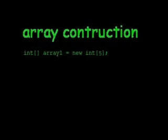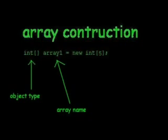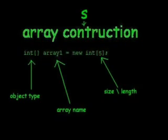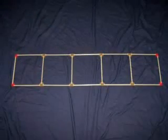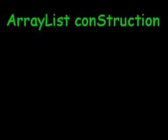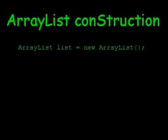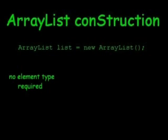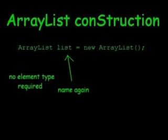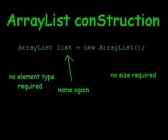For Array construction: first, you need an object type; then, you need an array name; then, you need the size or length. Here's how you construct an ArrayList. This time you don't need an element type, but you do need a name. However, the size does not need to be written again.